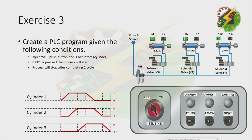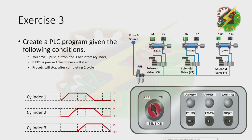Exercise 3. Create a PLC program given the following conditions. You have 3 push buttons and 3 actuators. If PB1 is pressed, the process will start. The process will stop after completing one cycle. The sequence is: Cylinder 1 extends; after reaching full extension, Cylinder 2 extends; after Cylinder 2 is fully extended, Cylinder 3 extends. Then Cylinder 1 retracts; after Cylinder 1 is fully retracted, Cylinder 2 retracts; after Cylinder 2 is fully retracted, Cylinder 3 retracts also.